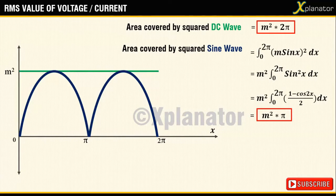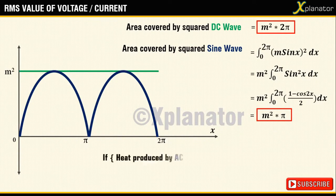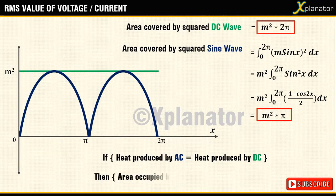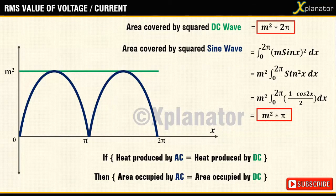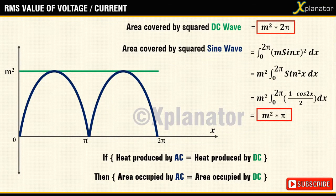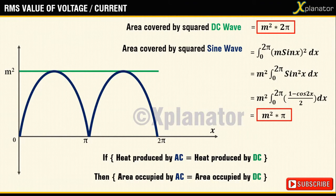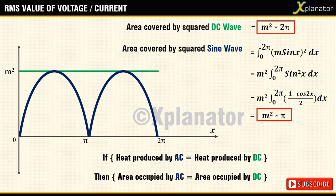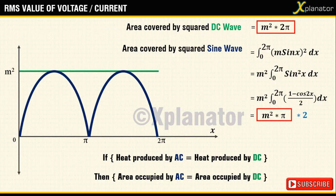Now if both the sources are producing the same amount of heat as per the definition, both the waves should occupy the same amount of area as well. We keep the DC wave as reference and see what magnitude of AC wave will match the area. If you multiply the equation of AC wave by √2, then you will get same area for both the cases.